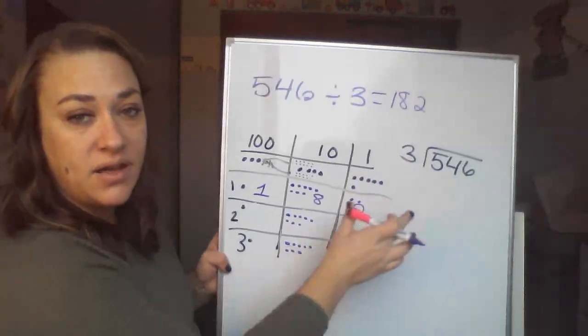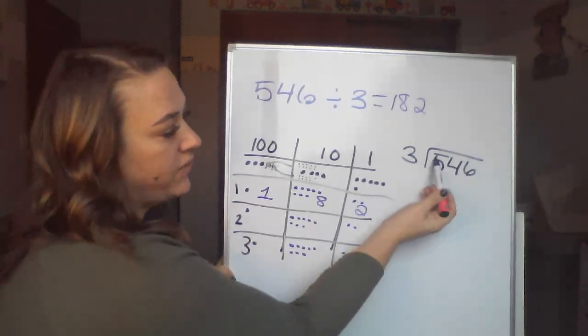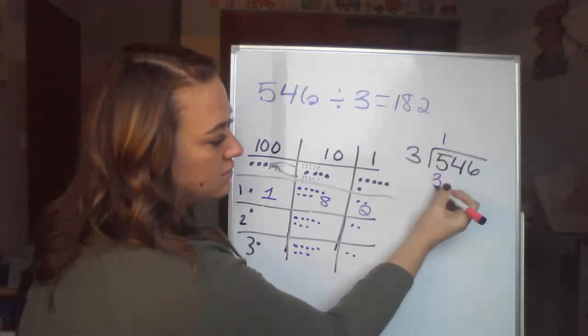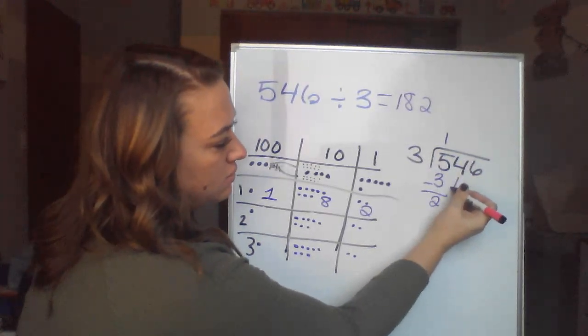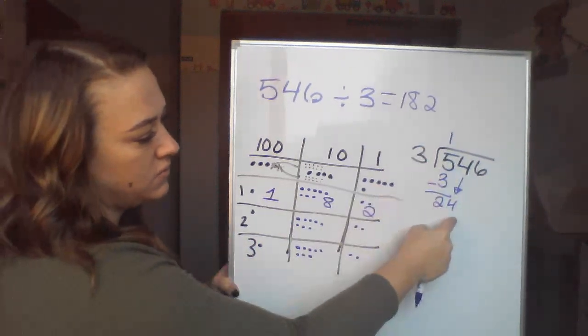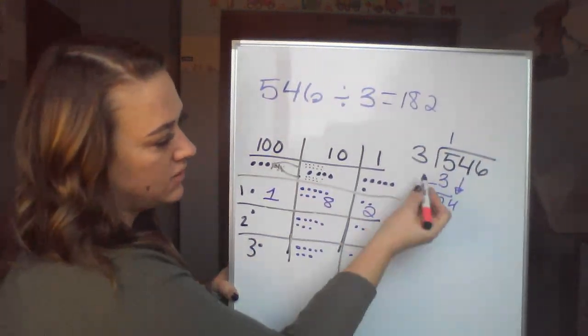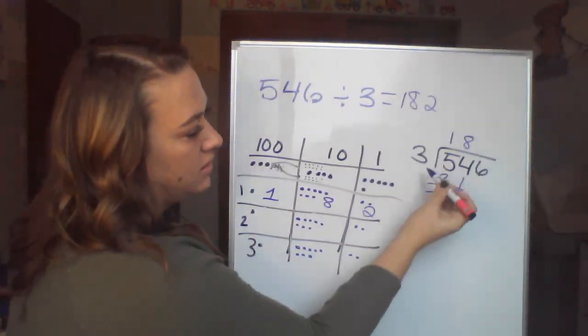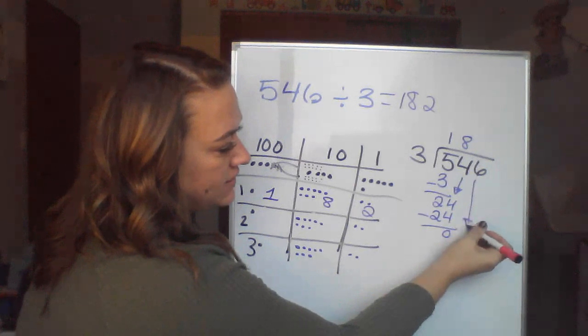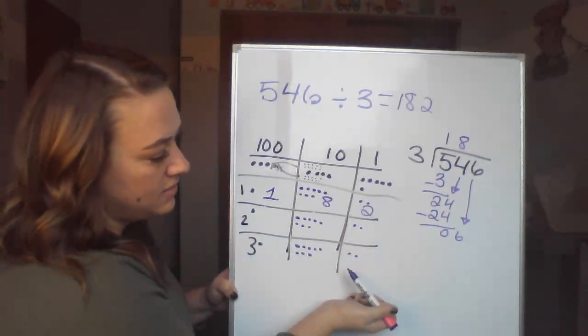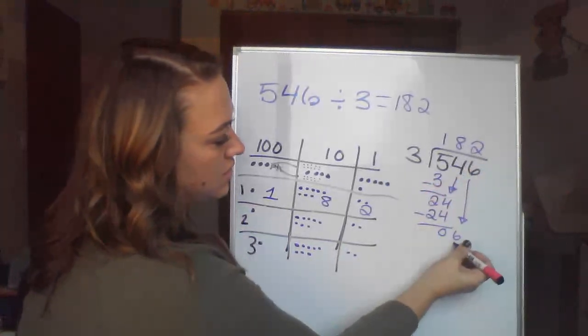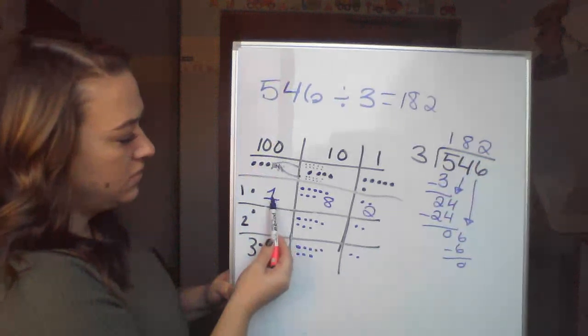So let's work through that with the standard algorithm and make sure it connects correctly. So 5 divided by 3. Well, 3 can go into 5 one time. 3 times 1 gives me 3. 5 minus 3 is 2. There's our 24. I've got 100. 3 can go into 24, 8 times. 3 times 8 is 24. And then we have to bring down our 6. We had 6 here that we had to divide into 3 groups. So 6 divided by 3 is 2. 3 times 2 is 6. 182.